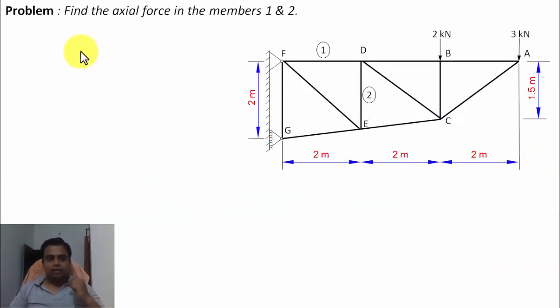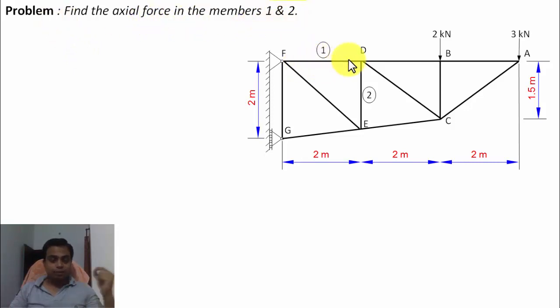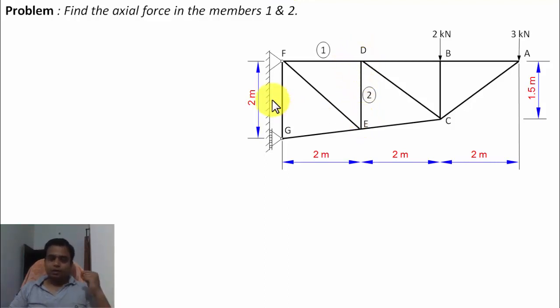Find the axial force in the members 1 and 2. So this is member 1, that is FD, and this is member 2, DE.